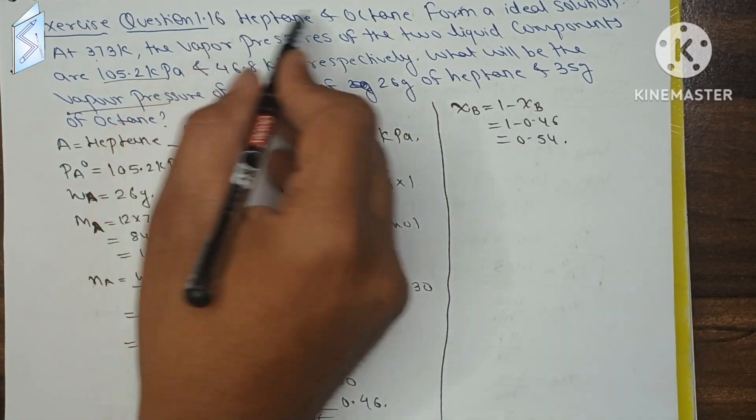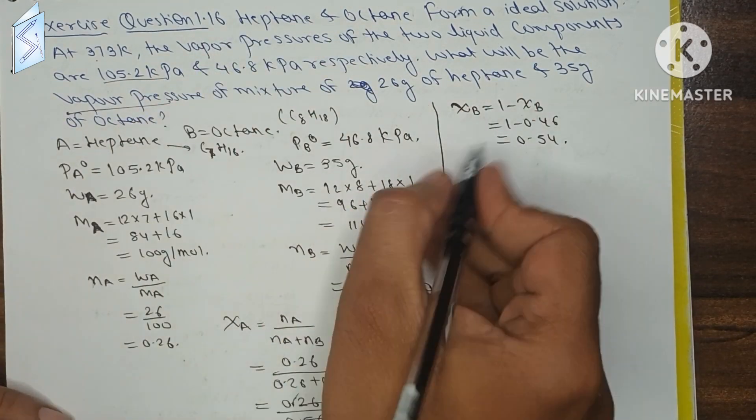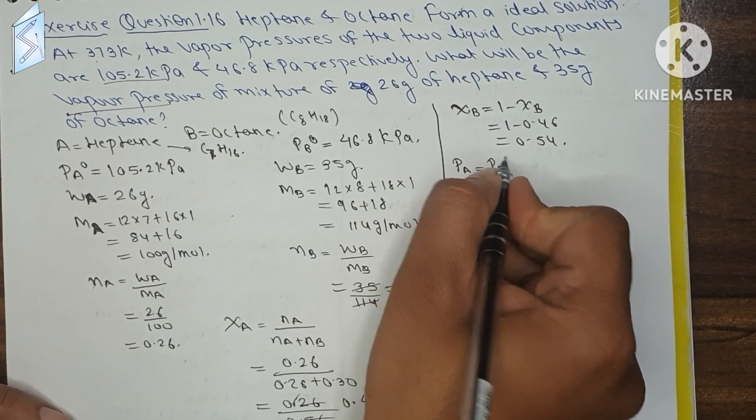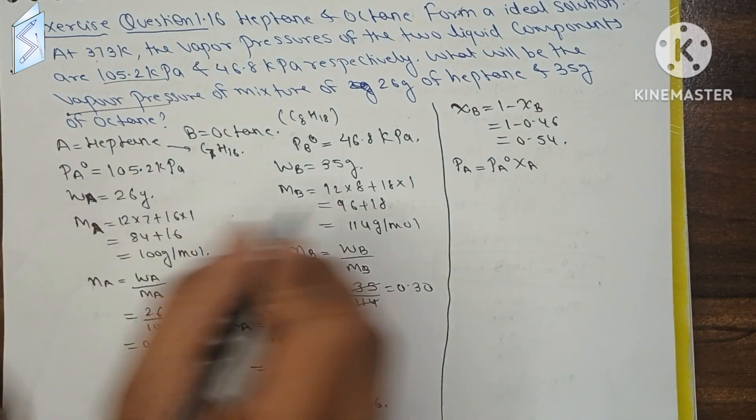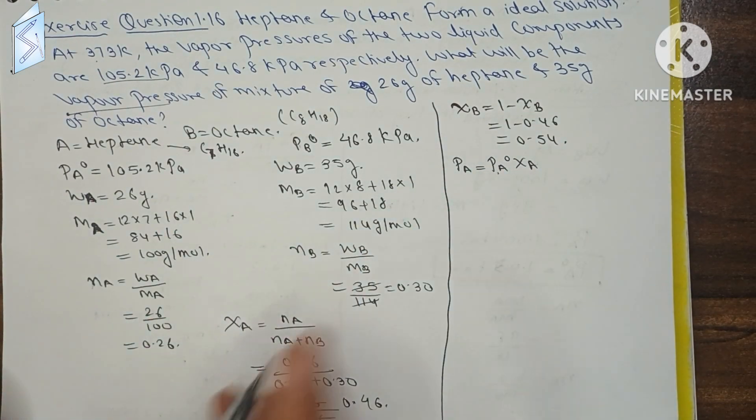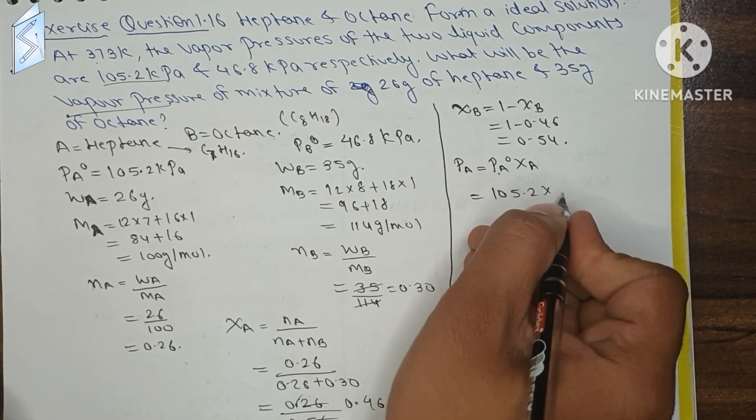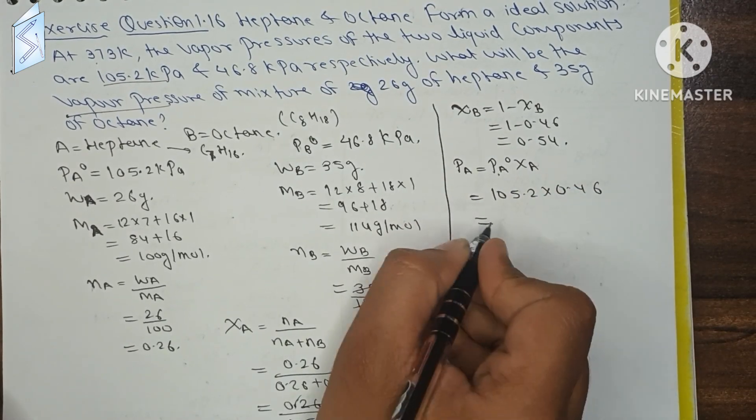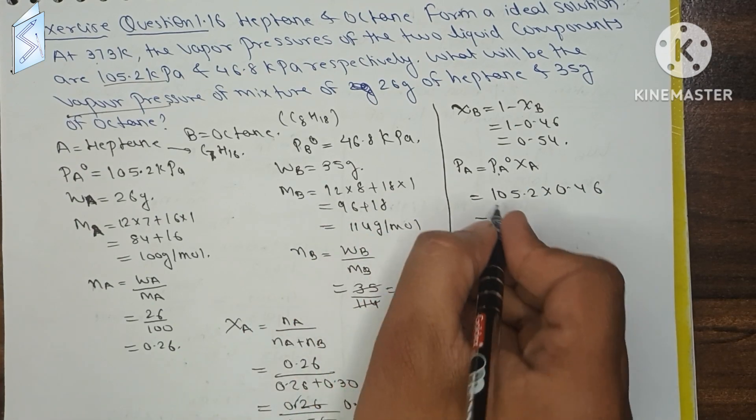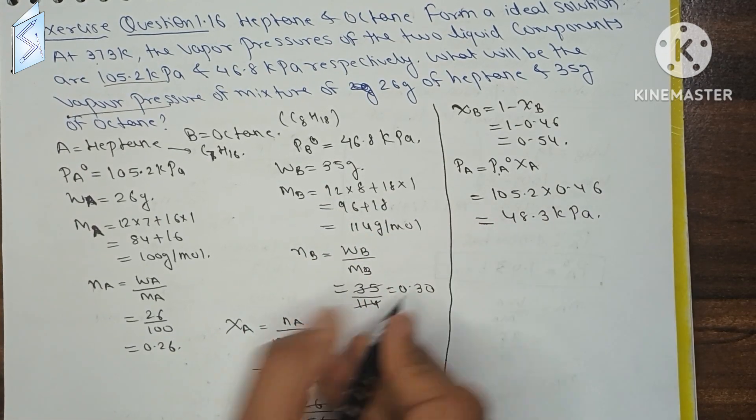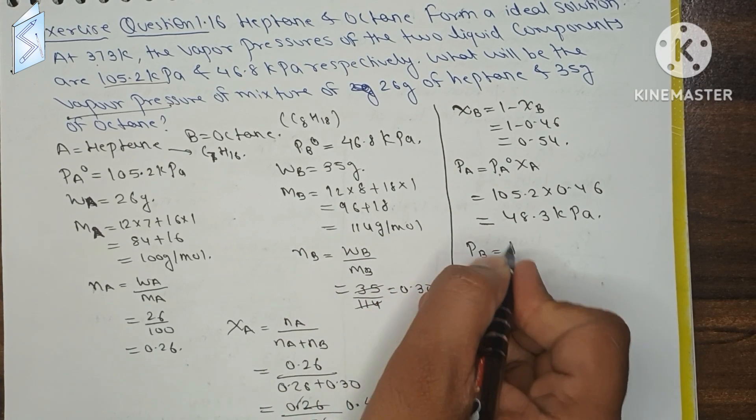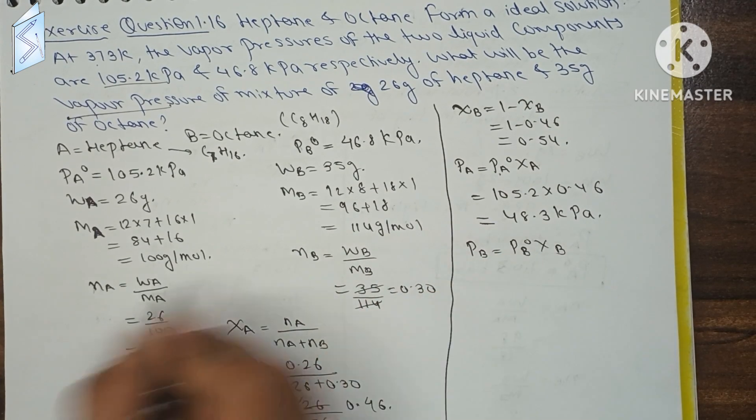What do we want to get? Vapor pressure in the heptane octane mixture. We want PA and PB. So PA equals PA0 times XA. PA0 is 105.2 and XA is 0.46. Multiply, then we have 48.3 kPa.